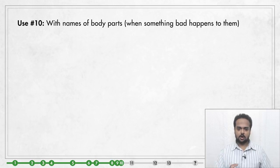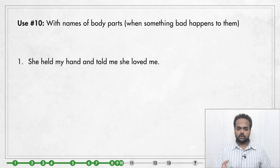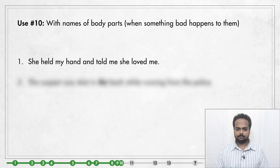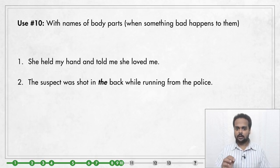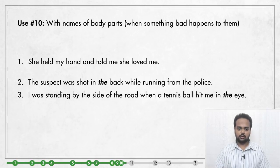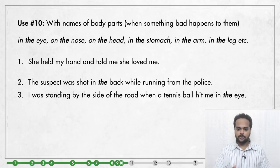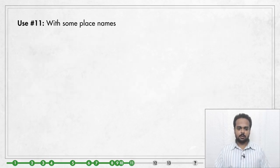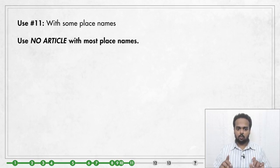The next use of 'the' is when we talk about body parts. Usually we use possessive forms — my, your, his, her — for example: 'She held my hand and told me that she loved me.' But when we want to talk about something bad happening to a body part, we use 'the.' For example: 'The suspect was shot in the back while running from the police' — notice I said 'in the back,' not 'in his back.' Similarly: 'A tennis ball hit me in the eye.' We can say in the eye, on the nose, on the head, in the stomach, in the arm, in the leg, etc.